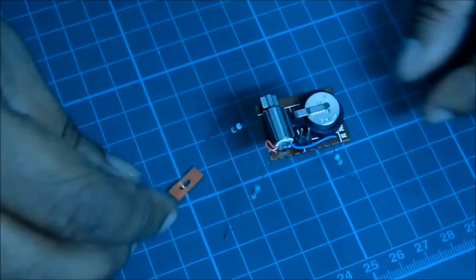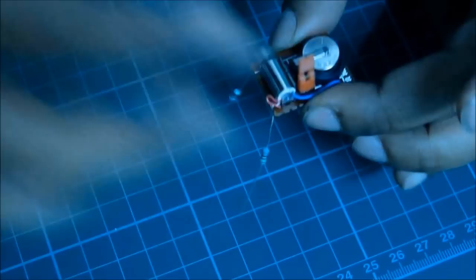The moment you put the jumper in, the current will flow, the circuit is complete, and it will move around randomly just like a small insect.